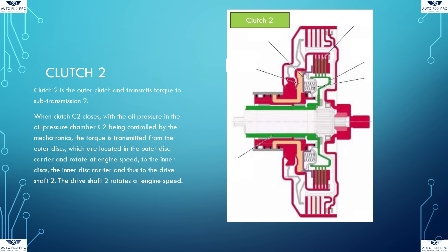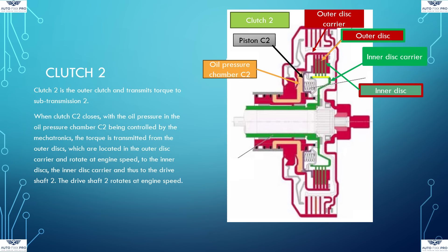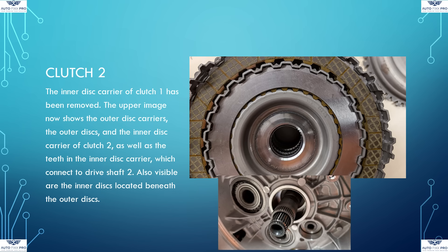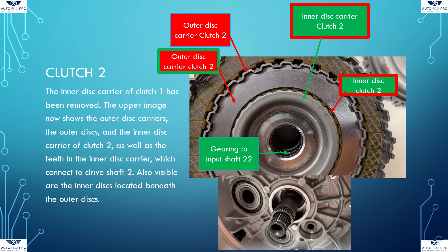Clutch 2 is responsible for power transmission to sub-transmission 2, and thus for the even gears — 2nd, 4th, and 6th gears. Here too, the torque is transmitted to the outer disc carrier of clutch 2. When clutch C2 closes by the piston C2 being actuated by the oil pressure in oil pressure chamber C2, the power is transferred from the outer disc carrier via the outer and inner discs to the inner disc carrier and via the teeth to driveshaft 2, which is designed as a hollow shaft. Driveshaft 2 rotates at engine speed. A coil spring is used to open clutch 2. The visible parts include the outer disc carrier, the outer discs, the inner discs, and the inner disc carrier, with the gearing in the center connecting to driveshaft 2.